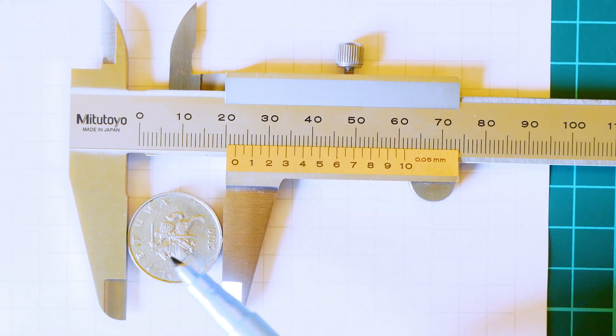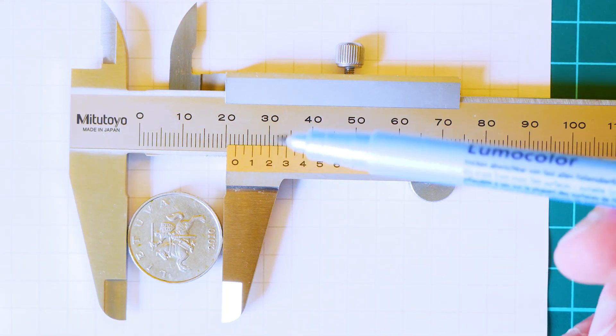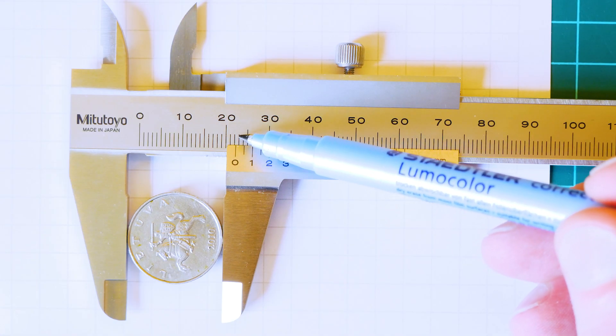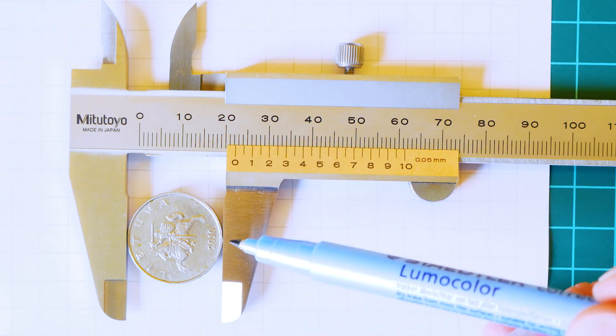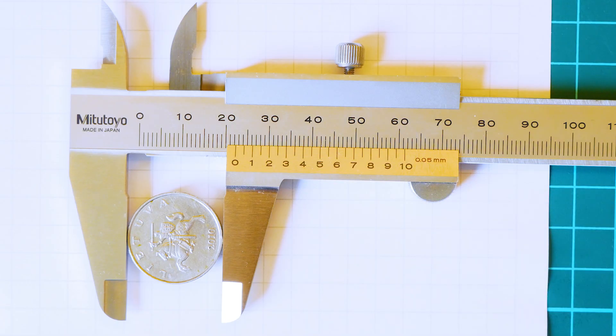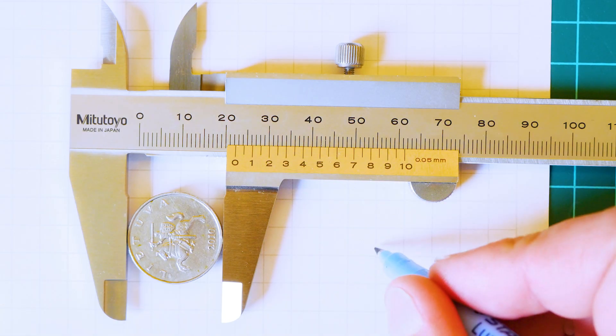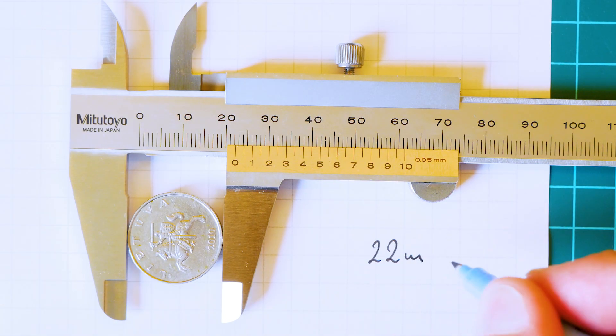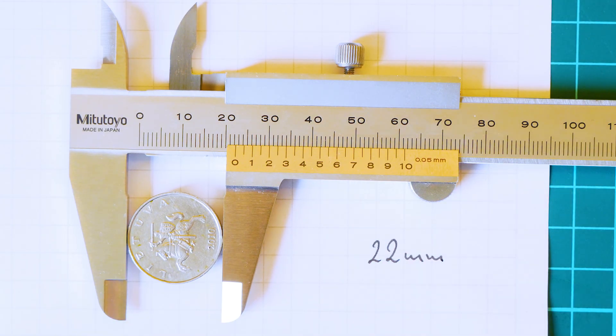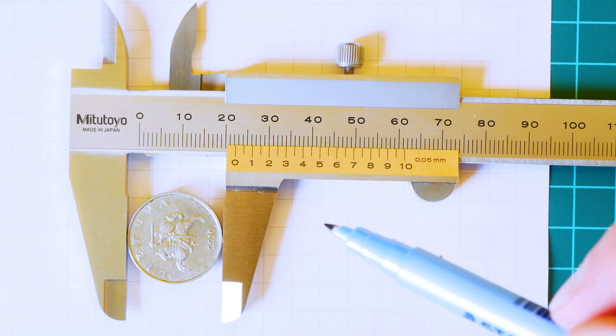When we have a coin inside our jaws, it's locked. We need to see where the zero is. The zero at this point is at 22 millimeters. Usually you make these calculations in your head, but just to make a point, we already have 22 millimeters.